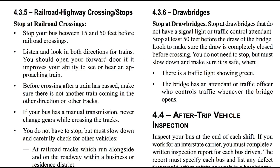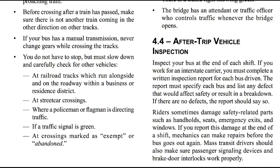Railroad Highway Crossing Stops: Stop your bus within 15 to 50 feet before railroad crossings. Listen and look in both directions for trains. Open your forward door if it improves your ability to see or hear an approaching train. Before crossing, after a train has passed, make sure there is not another train coming in the other direction on other tracks. If your bus has a manual transmission, never change gears while crossing the tracks. You do not have to stop, but must slow down and carefully check for other vehicles at railroad tracks which run alongside and on the railroad within a business or residential district, at streetcar crossings where a policeman or flagman is directing traffic, if a traffic signal is green, or at crossings marked as exempt or abandoned.